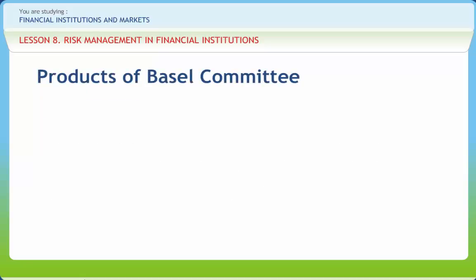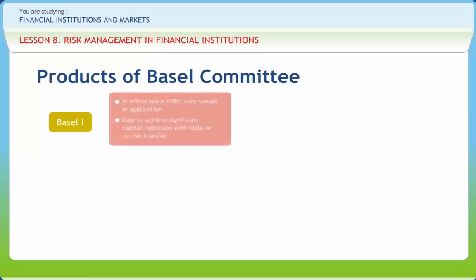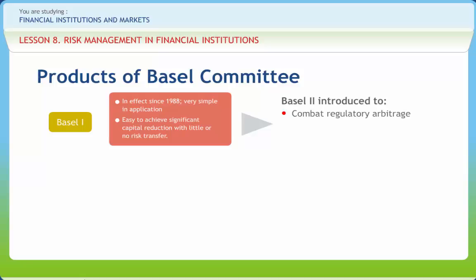Basel 1 and Basel 2 are products of the Basel Committee. Basel 1 was in effect since 1988. It is very simple in application and easy to achieve significant capital reduction with little or no risk transfer. Basel 2 was introduced to combat regulatory arbitrage, exploit and improve bank and risk management systems.